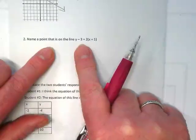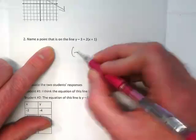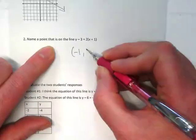When this says name a point on the line for this equation, we're going to find that this is negative 1 and this is positive 3.